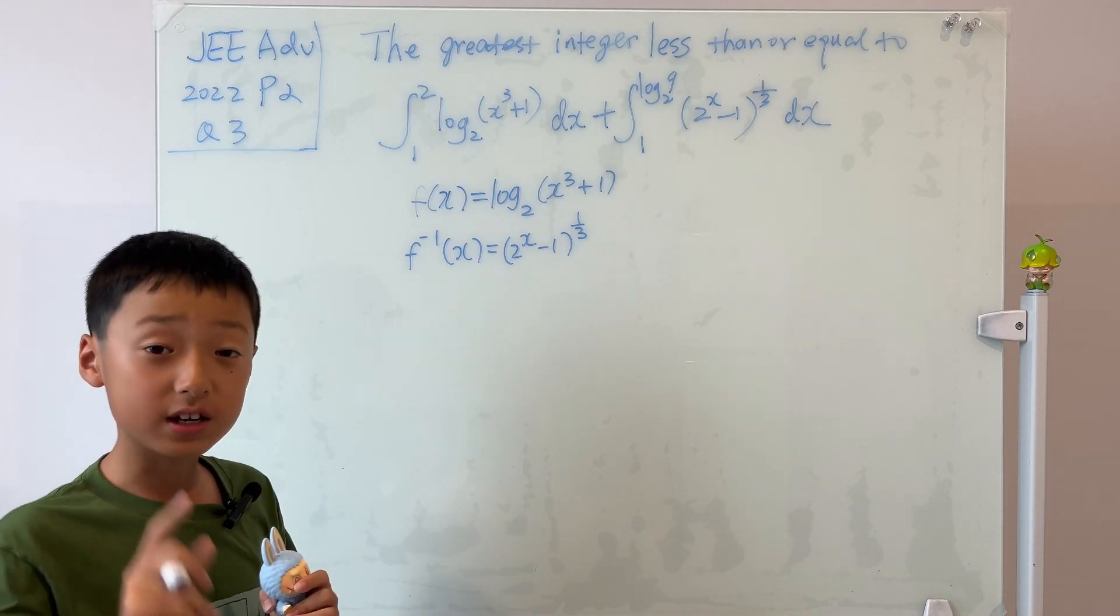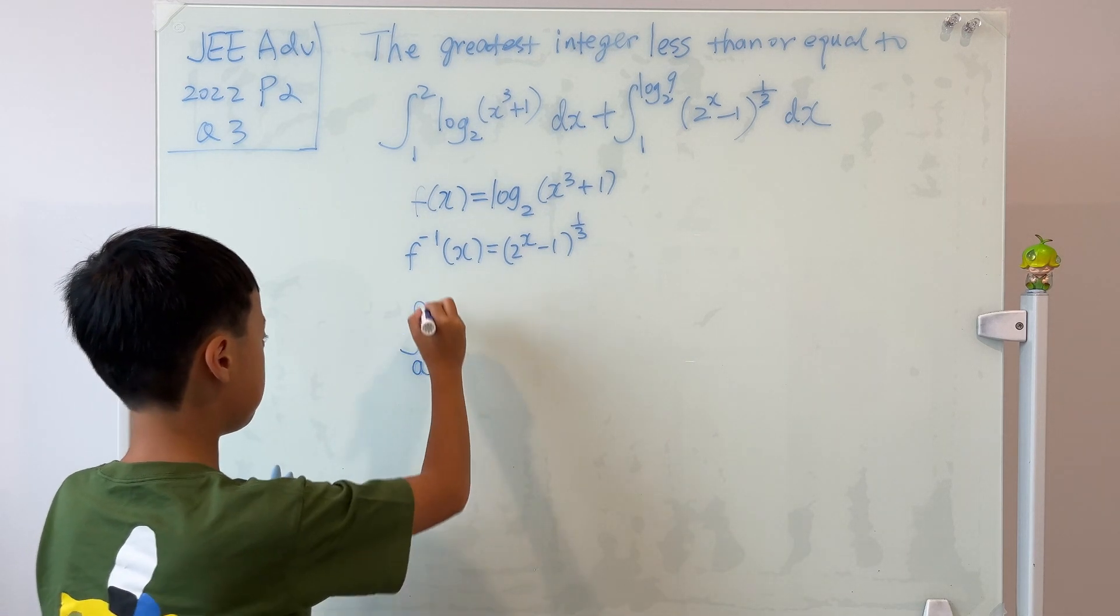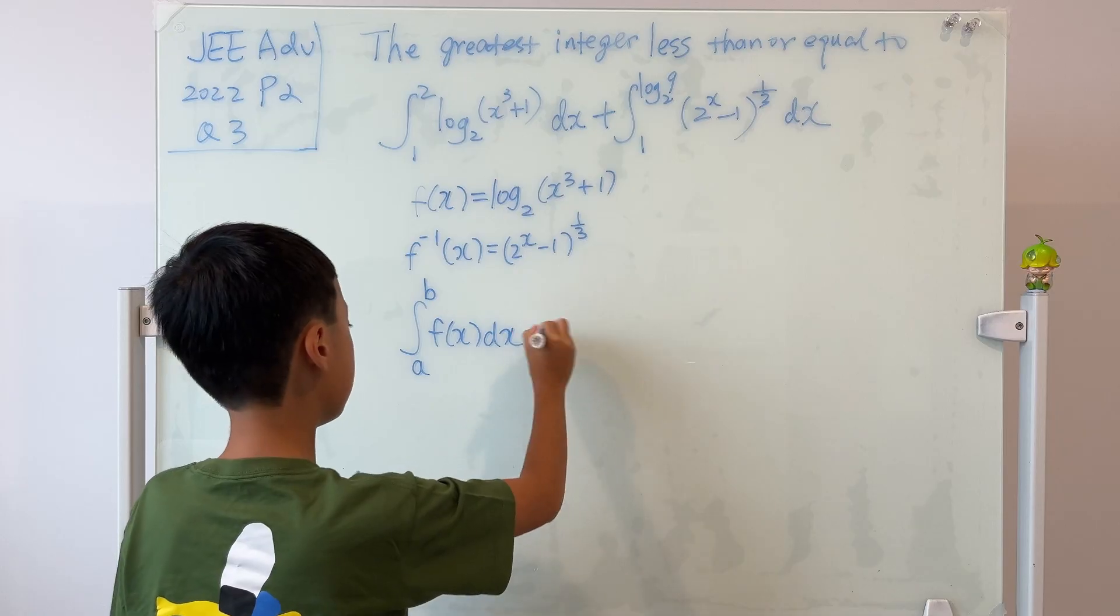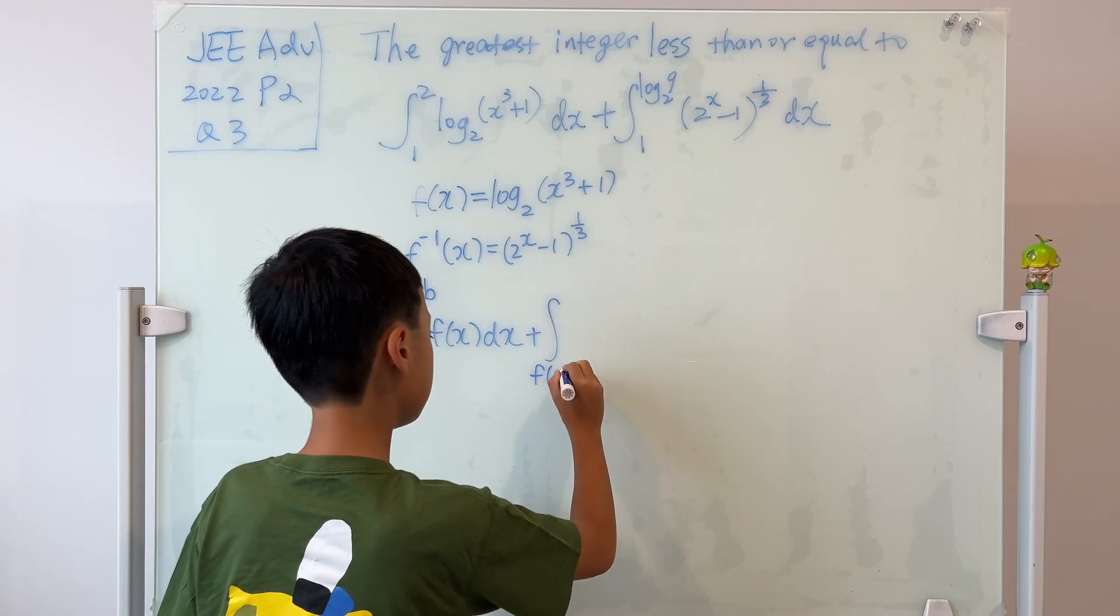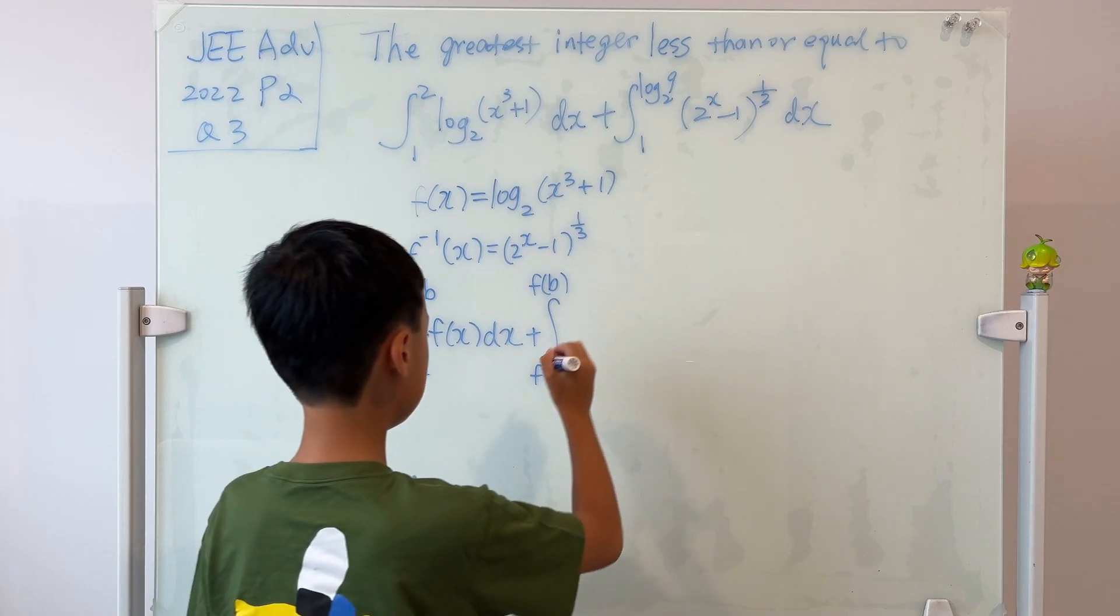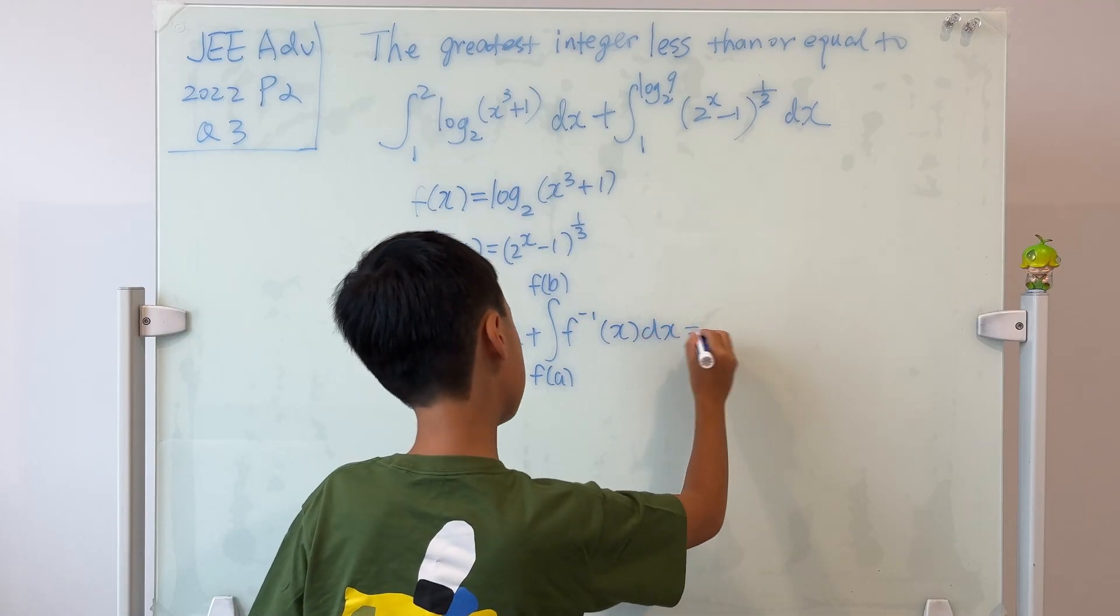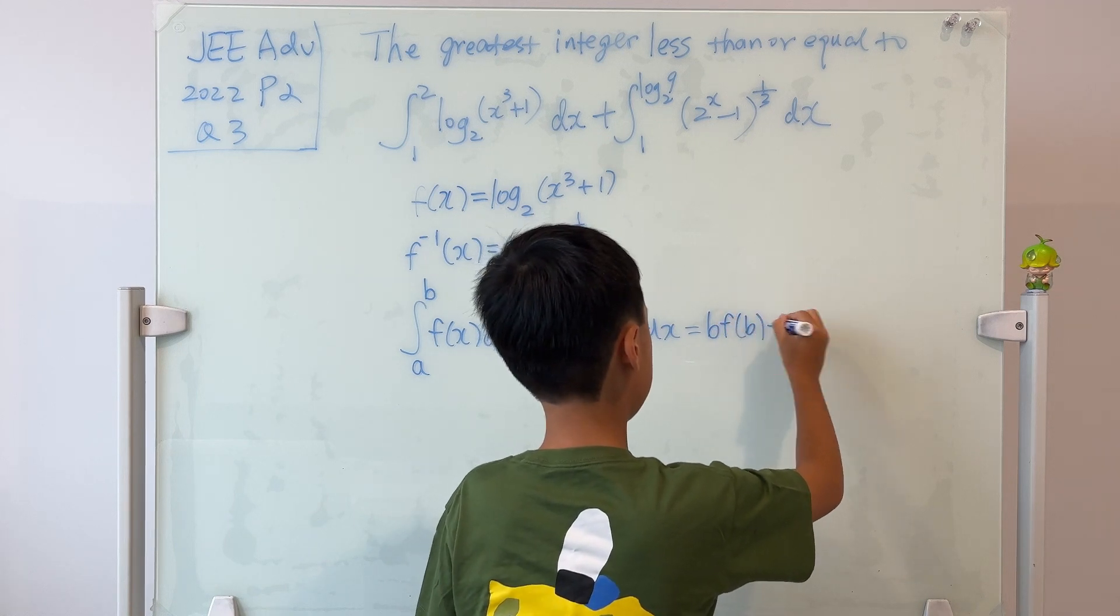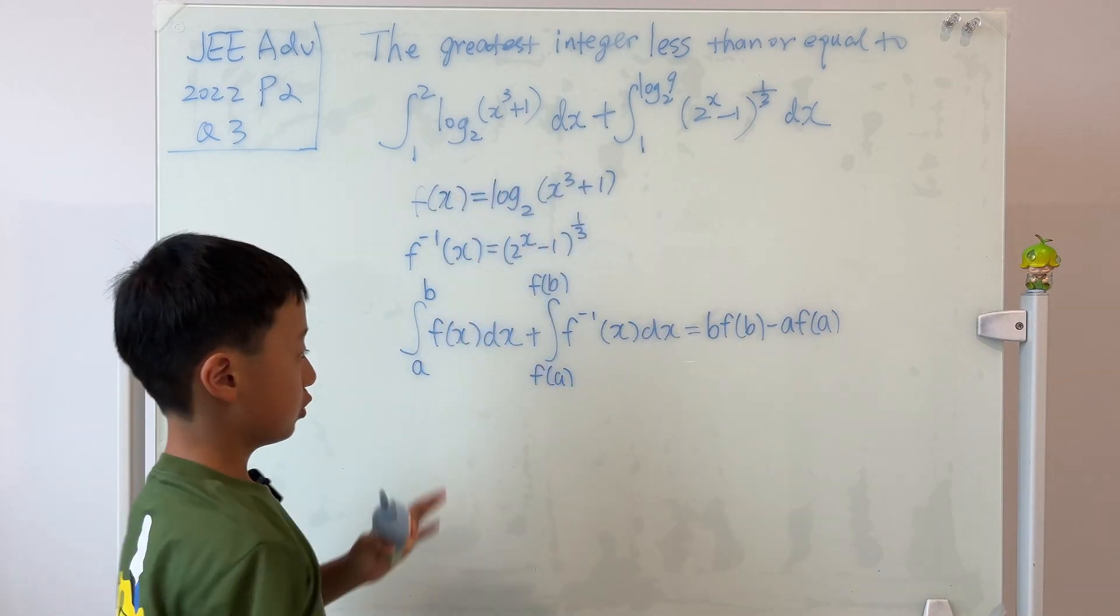With that in mind, I'm going to tell you guys a simple formula. An integral from a to b of a function x dx, we add it with another integral, but the bounds are from f(a) to f(b), and then the input is f inverse of x dx. Then this is actually equal to b times f(b) minus a times f(a). Let's just see if these two integrals make this criteria.